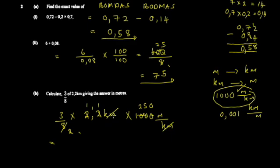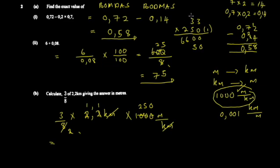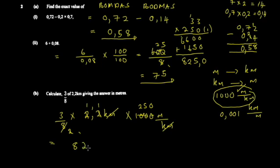You get 3.3 multiplied by 250. There is one decimal place from 3.3. Multiplying: 3 times 250 gives 750, and 0.3 times 250 gives 75; combining gives 825. Adjusting for the one decimal place and checking: the answer is 825 meters.